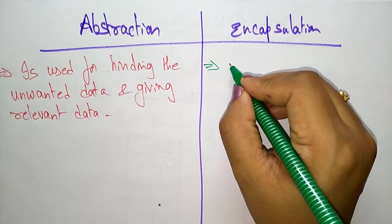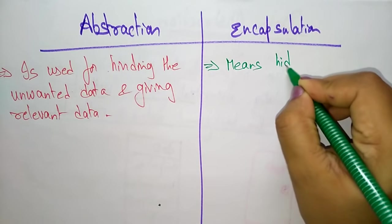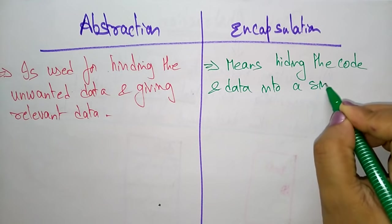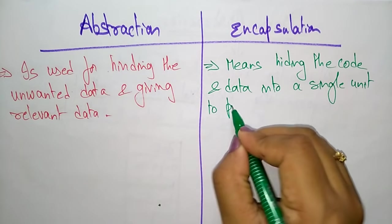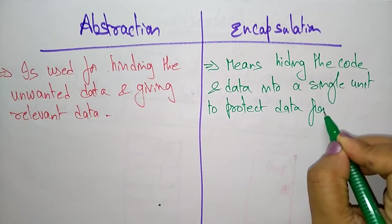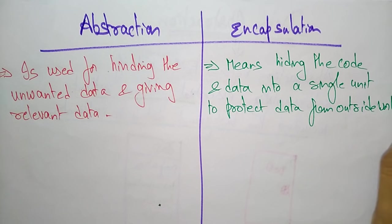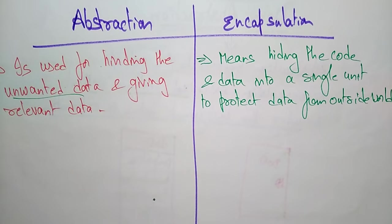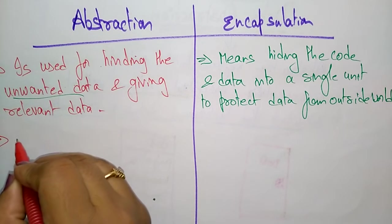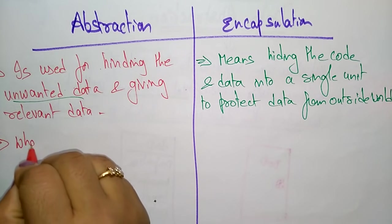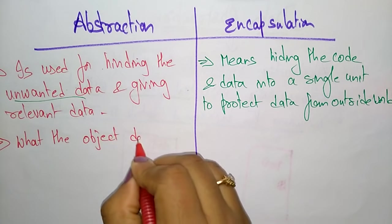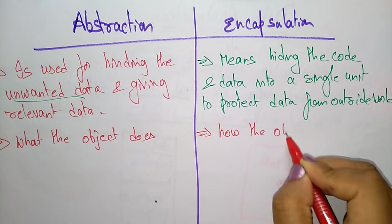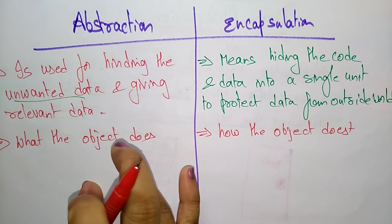Encapsulation means hiding the code and data into a single unit to protect the data from the outside world. So to protect the data from the outside world, it hides the complete code and data into a single unit. Here in abstraction, it is only hiding the unwanted data. Abstraction lets you focus on what the object does, whereas encapsulation focuses on how the object does it.